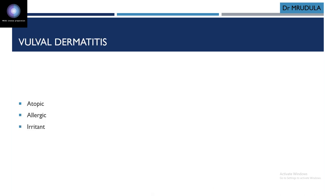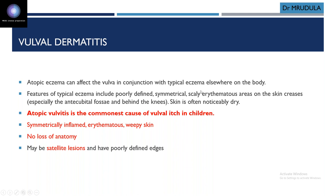Vulval dermatitis has three types: atopic dermatitis, also called eczema; allergic dermatitis; and irritant dermatitis. Atopic dermatitis can affect the vulva in conjunction with other body parts — you have to check for that. It is usually poorly defined, symmetrical, scaly, erythematous areas. Skin is always dry. There is no loss of anatomy. These are symmetrical erythematous lesions — all these are keywords for atopic dermatitis.